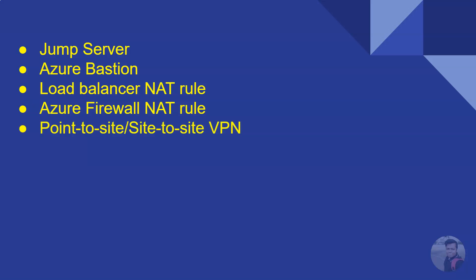There are two more options: VPN — you can create a point-to-site VPN or a site-to-site VPN — and also ExpressRoute, which you can use to connect to a virtual machine. So those are the ways you can connect to a private virtual machine in Azure. Thank you for watching.